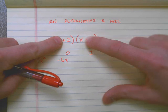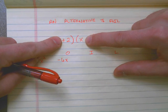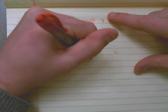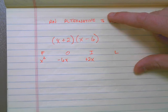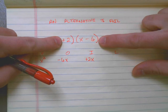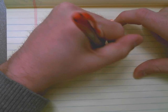I would take the inner terms, 2 and x, and multiply those together, which gives me a positive 2x. And then I would take the last terms, so I would have -6 times 2, that gives me -12.